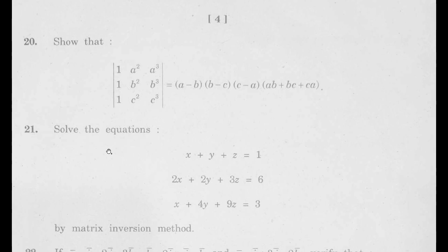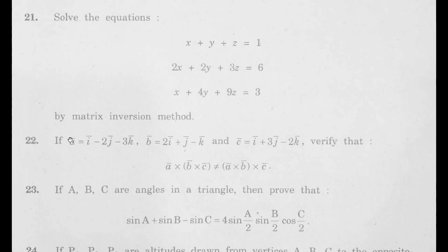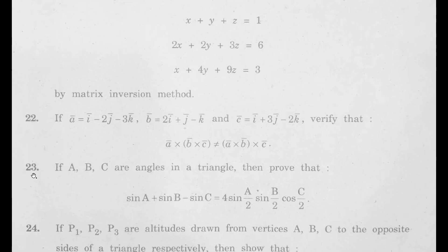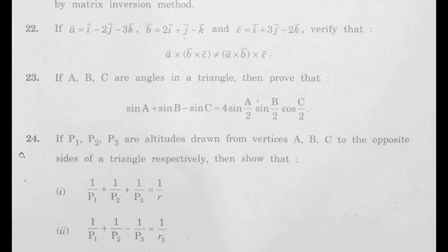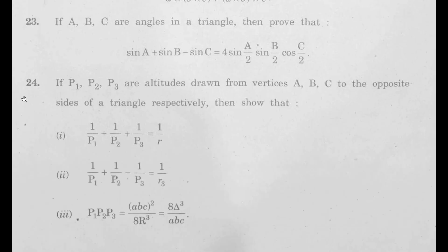Fourth LAQ also came from chapter 3 matrices, fifth LAQ came from chapter 5 product of vectors, sixth LAQ came from chapter 6 trigonometric ratios up to transformations, and the last seventh LAQ has come from chapter 10 properties of triangles.